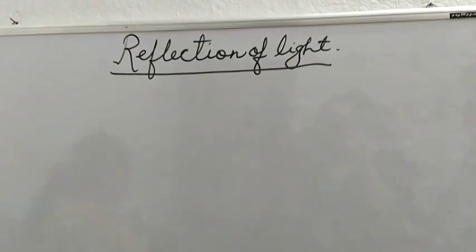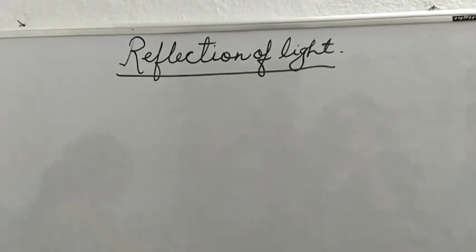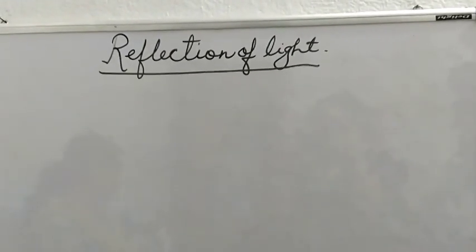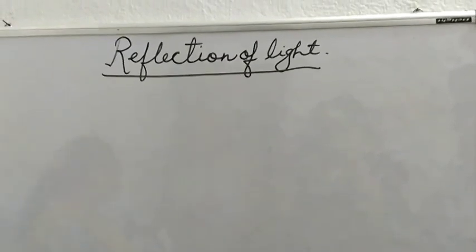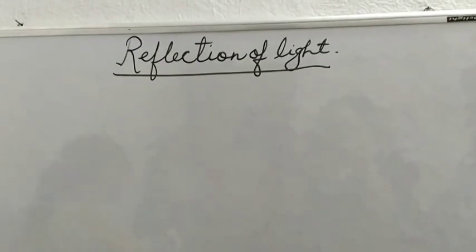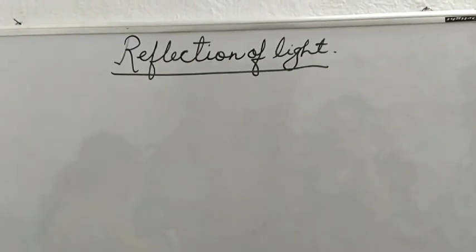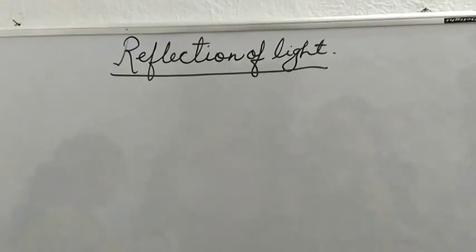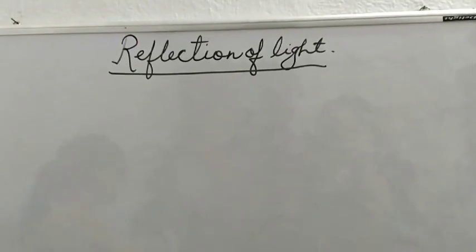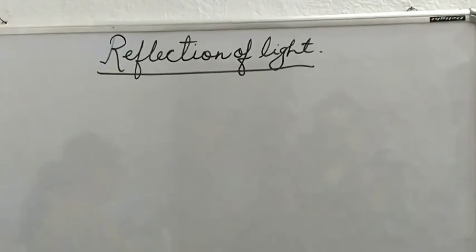Once again I am repeating: the change of path of light after falling on some object is called reflection of light. It is found that reflection of light from a surface always takes place in a well defined manner, and it takes place in accordance with two simple rules, or you can say laws of reflection.